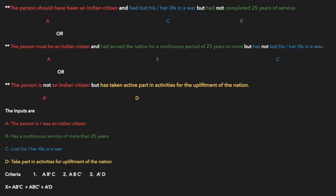Coming to the second criteria: the person must be an Indian citizen — A is taken as it is. Had served the nation for a continuous period of 25 years or more — B is taken as uncomplemented. Has not lost his or her life in a war — since it says 'not' and C means lost life in war, C is taken as complemented, C-bar. So the second criteria expression is A·B·C'.